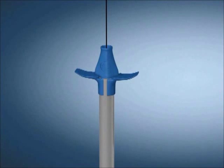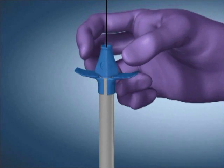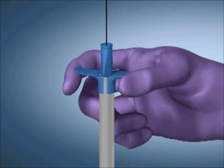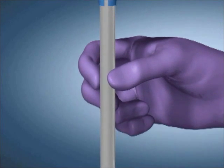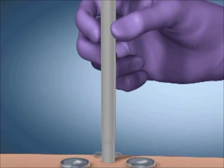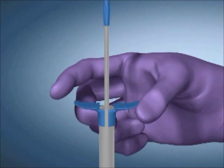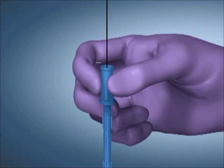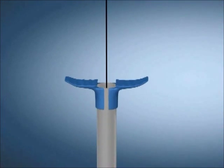Twist the dilator hub to release the peel-away sheath from the dilator. Lubricate the exterior of the peel-away sheath with a water-soluble lubricant and advance the sheath through the tract and into the stomach. Remove the dilator and J-guide wire, leaving the peel-away sheath in the stomach.